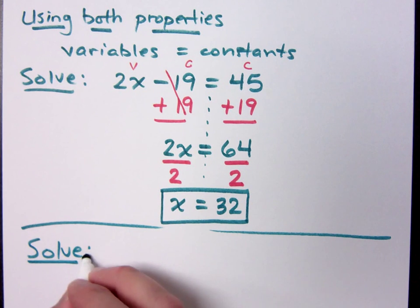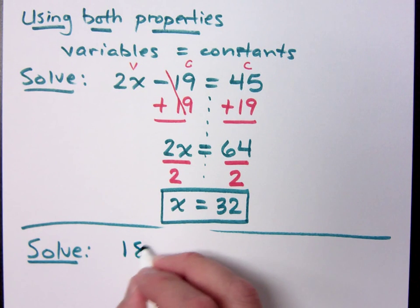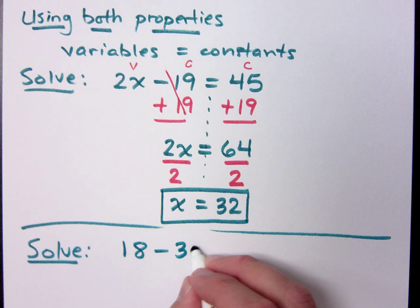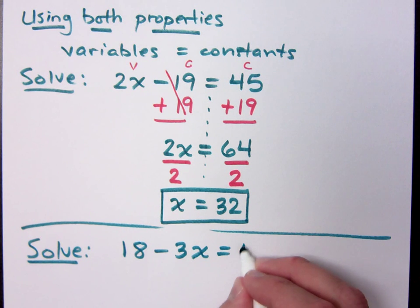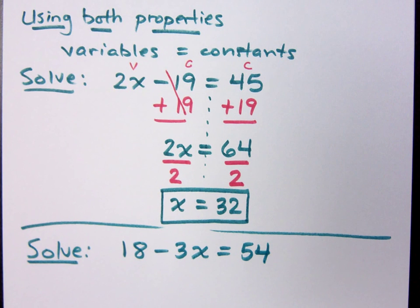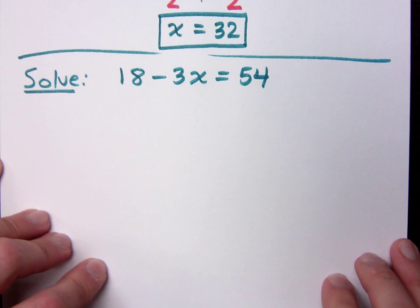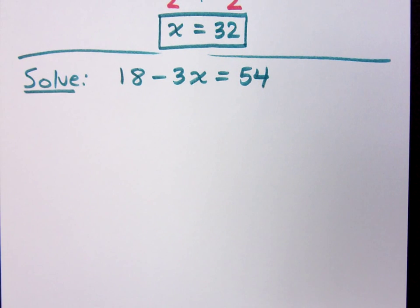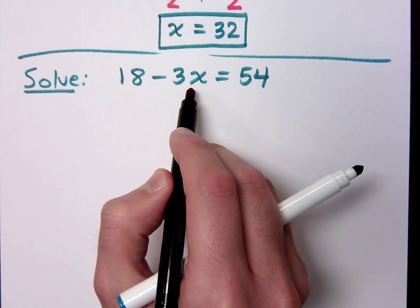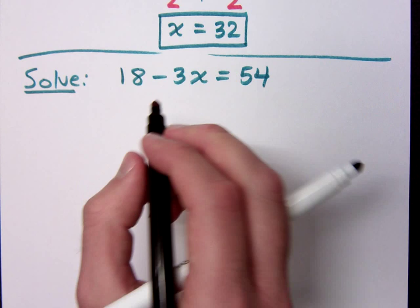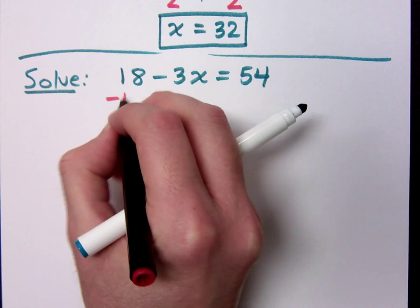Let's try another one. The more of these you do, the better you will be. There's no telling how many hundreds of these problems I've done in my life — I'm pretty good at them. So what will I do for this problem? 18 minus 3x equals 54. Subtract 18. This is the only variable term you have, so move the 18.